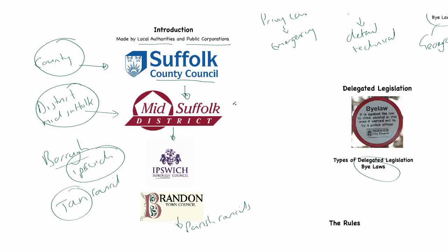Examples of those laws could be things like drinking in public. Those of you that spend time in local towns might see bylaws about not being able to drink outside of public houses, or the times you can drink in public places. Similarly, they also make laws about dog fouling. There are loads and loads of bylaws, but those are just two accessible examples.